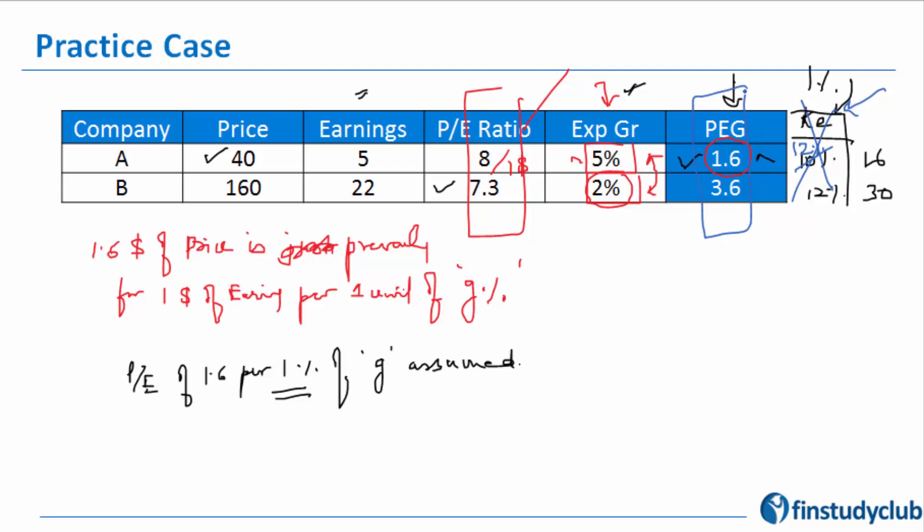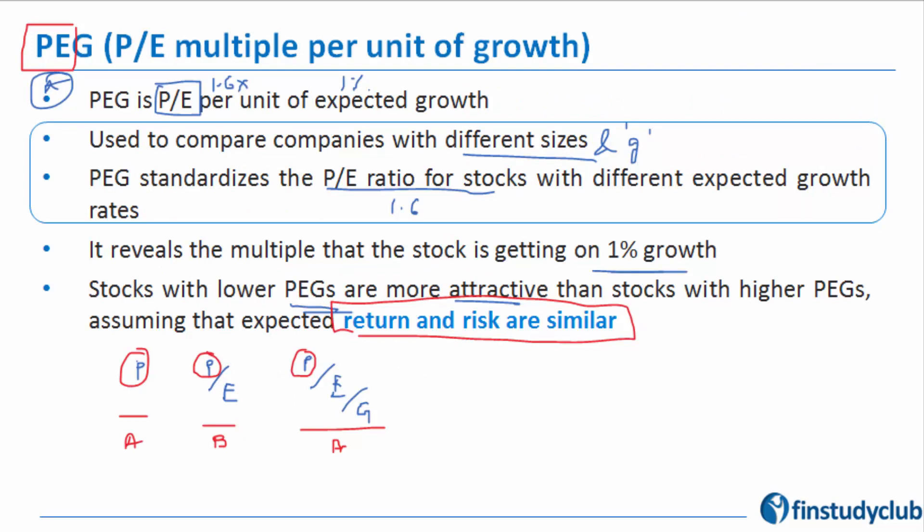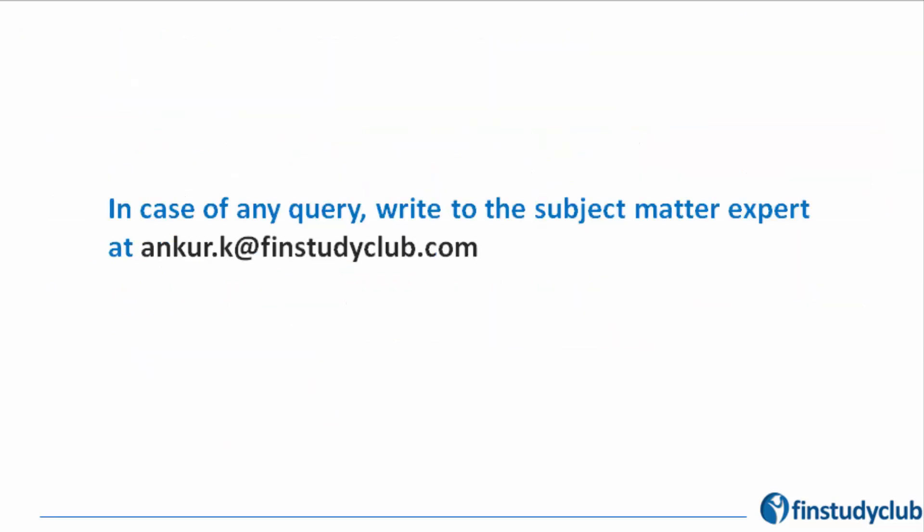PEG would have been a perfect ratio if both the cost of equity would have been the same—12 and 12. I hope this small discussion on PEG is helpful. Should you have any problem, reach out to me at ankur.k@finstudyclub.com. Happy to help.